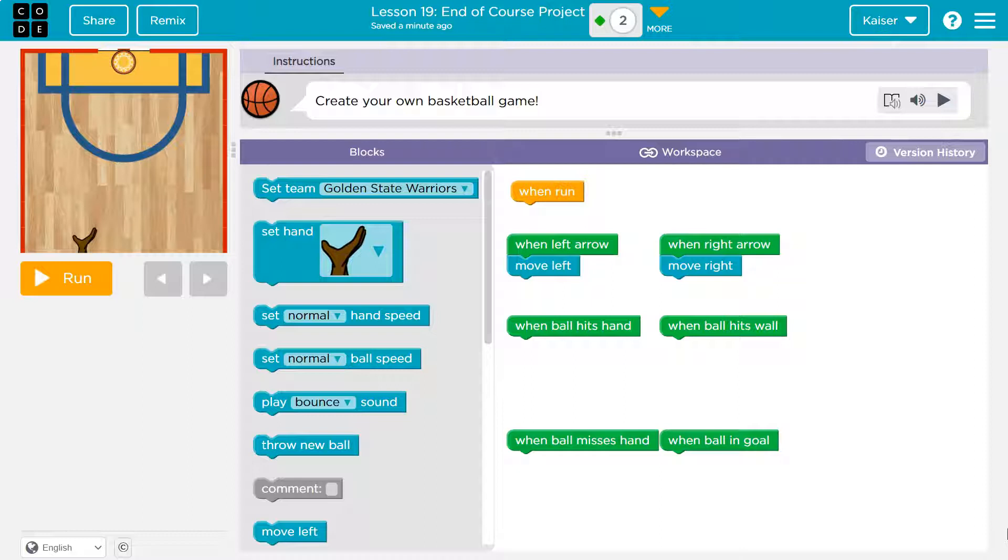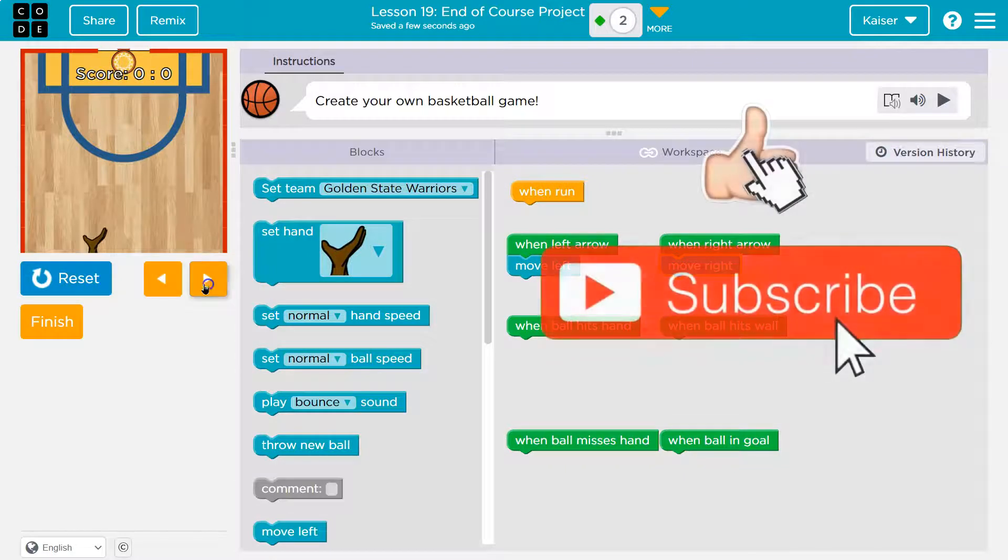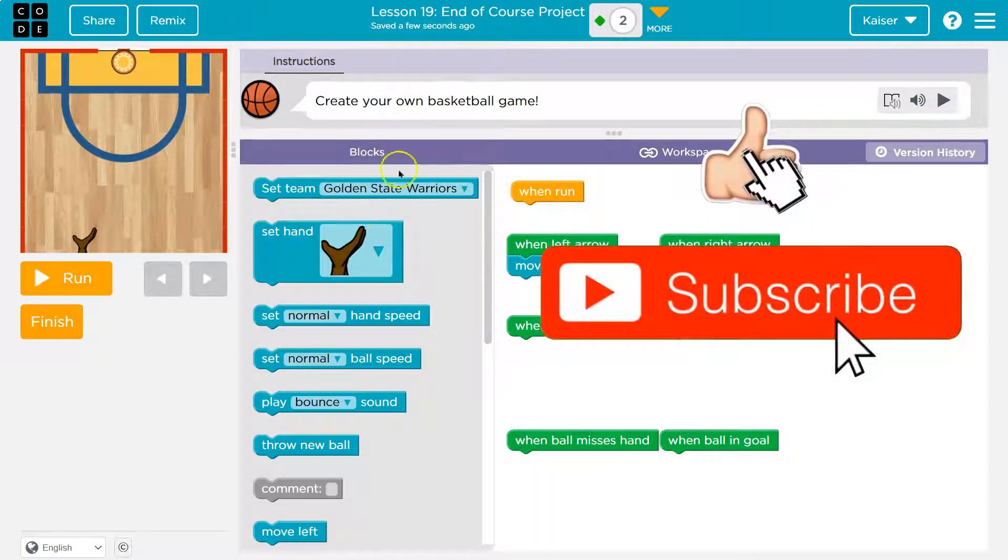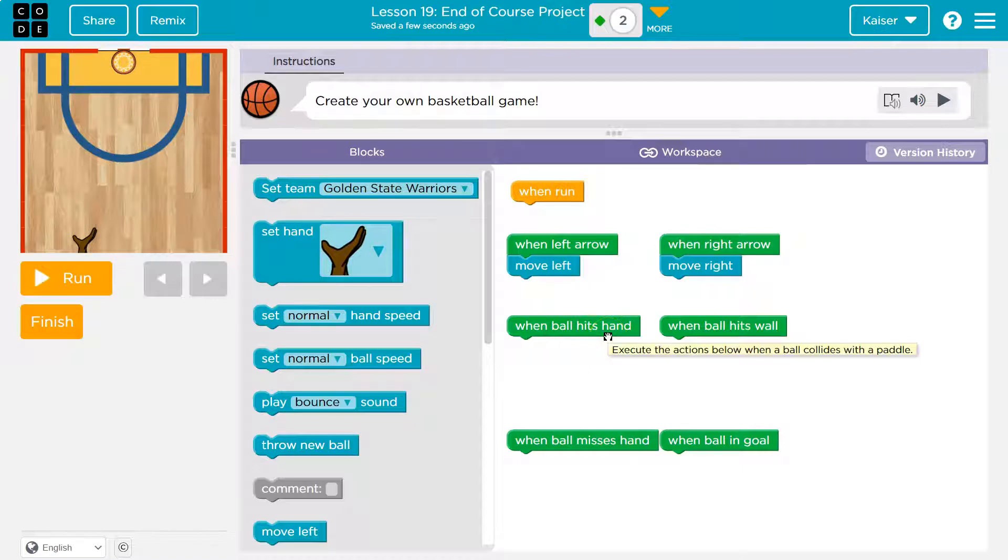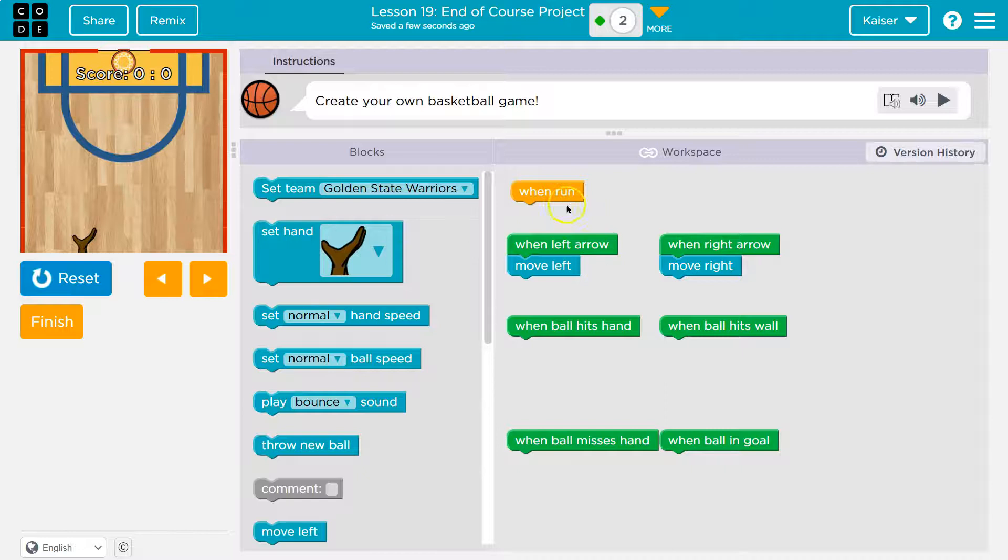So, to start this off, we can see that we have our win-run block and the ability to move left and right when I hit these arrows. Now what should I be adding? Hmm, when the ball hits the hand, okay, but does the ball even show up? I don't even see the ball.